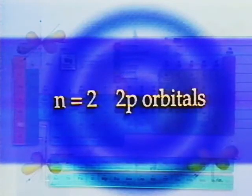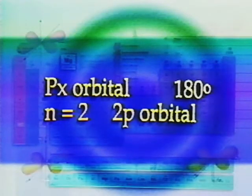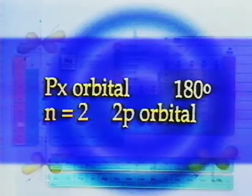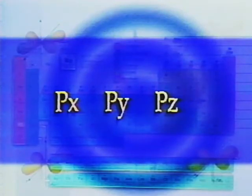Other types of orbitals with more complex shapes are found for n greater than 1. A p orbital is dumbbell-shaped, with its center at the nucleus. The dumbbell consists of two lobes 180 degrees with respect to each other. There are three types of p orbitals with the same size and shape but different orientations — they lie along the x, y, and z axes of the Cartesian coordinate system and are designated the px, py, and pz orbitals.